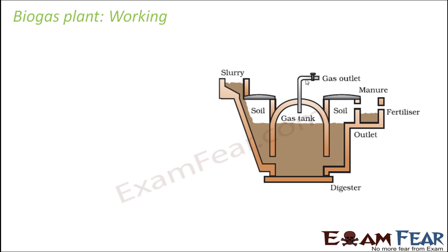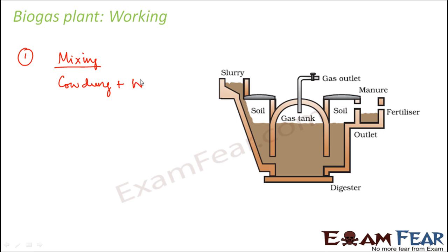Let us quickly look at the working of the biogas plant. The first step is mixing: cow dung gets mixed with water to form slurry, and this happens in the mixing tank.